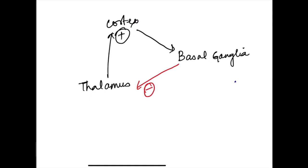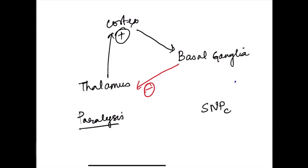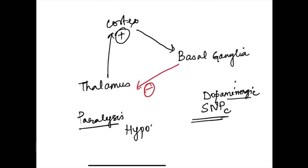Parkinsonism, also known as paralysis agitans, is a disorder in which the substantia nigra pars compacta component of the basal ganglia is affected. The dopaminergic neurons present in the substantia nigra pars compacta get destroyed, and with the destruction of these dopaminergic neurons, what we get is a hypokinetic disorder.